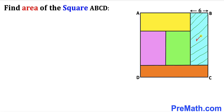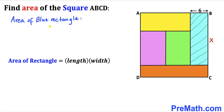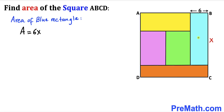Let's focus on this blue rectangle. Let's assume that this side length is x centimeters. Recalling the area of a rectangle formula — area equals length times width — our length is x and our width is six. Therefore, the area of this blue rectangle is A = 6x centimeters squared.